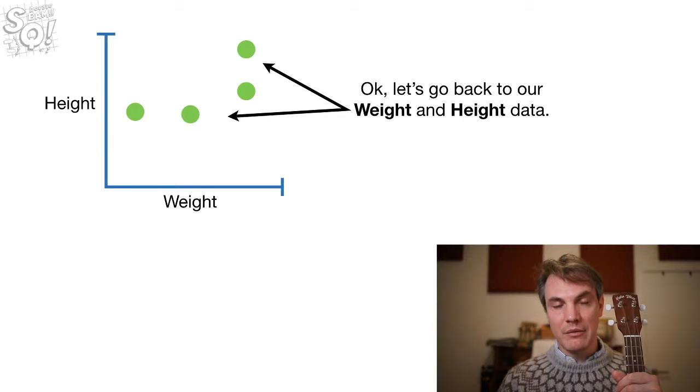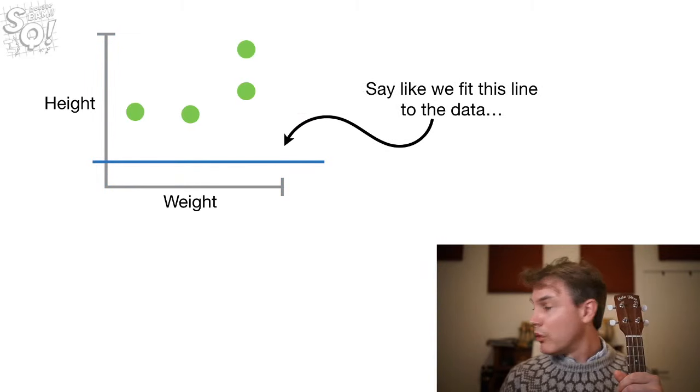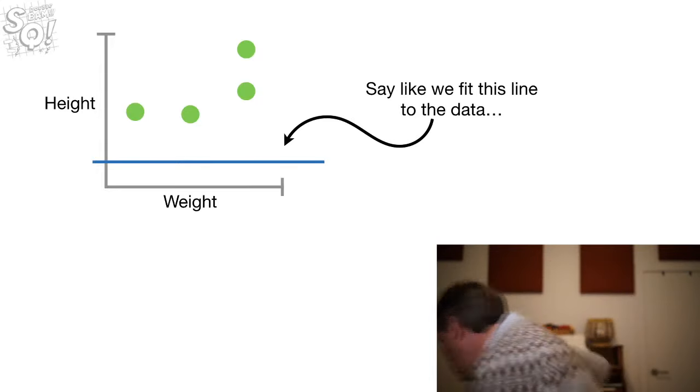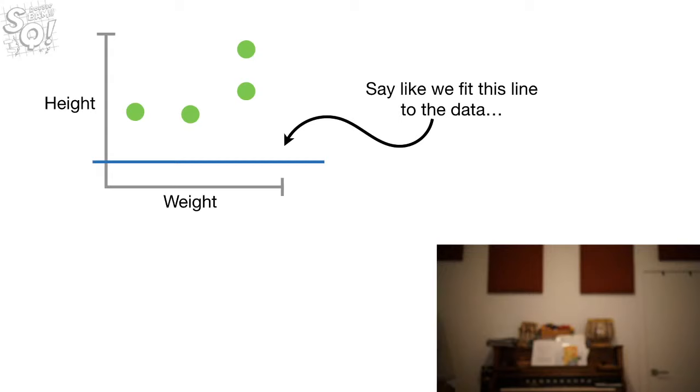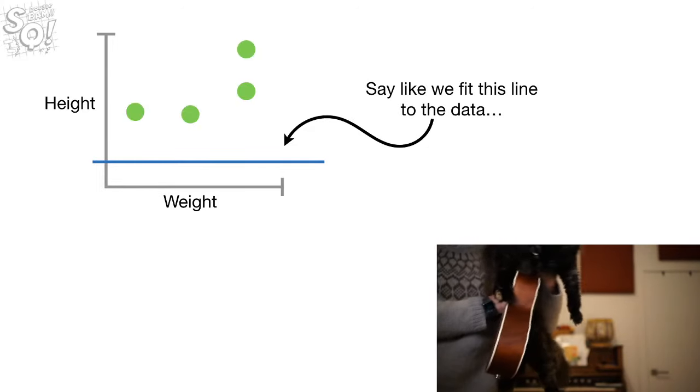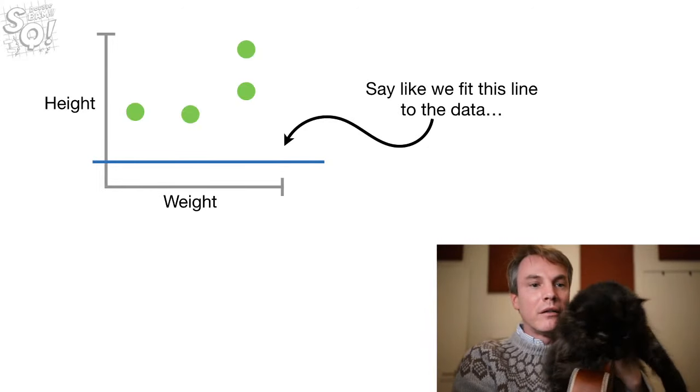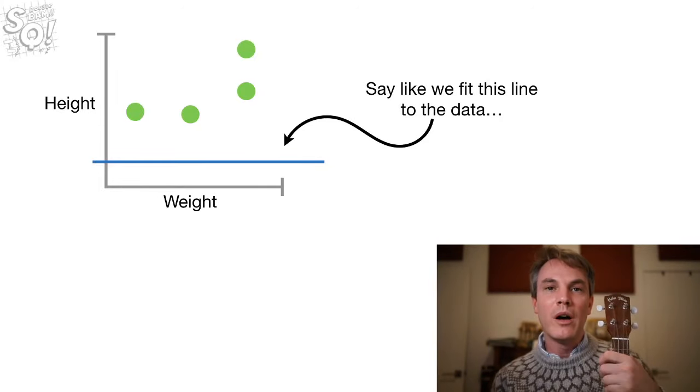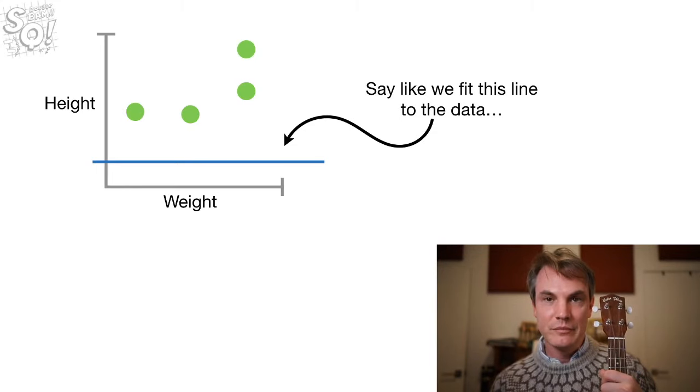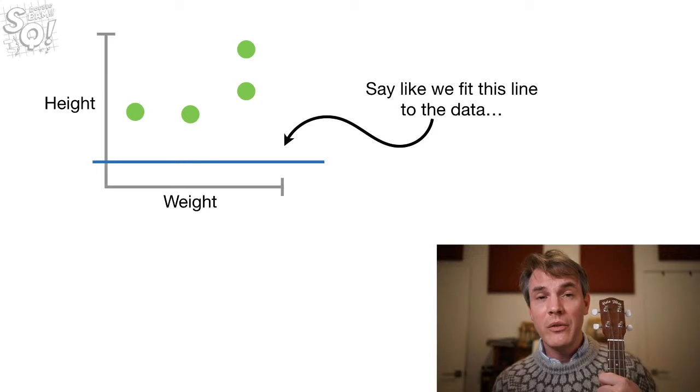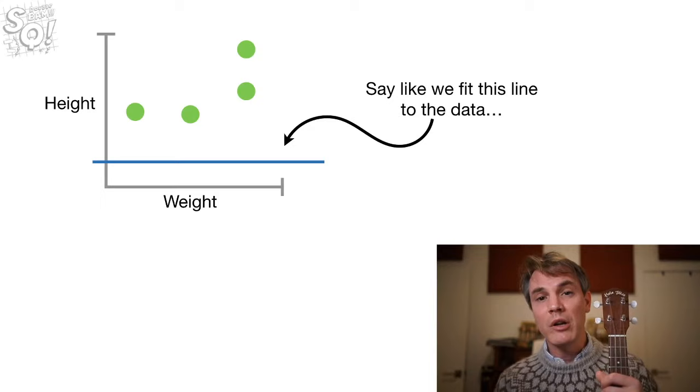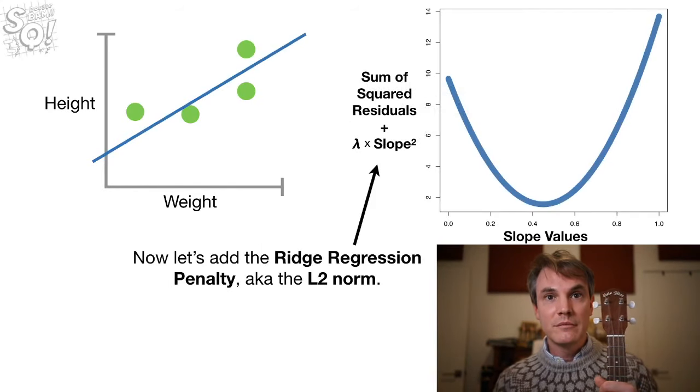Okay, so we're going to go back to our weight and height data. My cat wants in the room. Hold on. Let me let the cat in. This is my cat. Okay, back to what we were doing. So, say we fit this line to the data. I know this is a terrible fit to the data. It's a horizontal line. It's about as bad a fit as you could possibly have. But it's a starting point. We're going to improve on it in just a little bit.